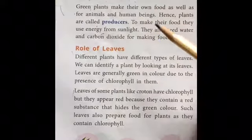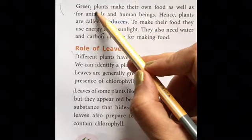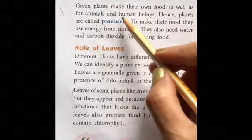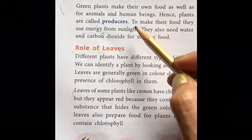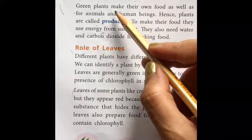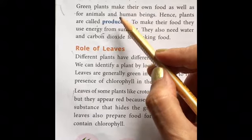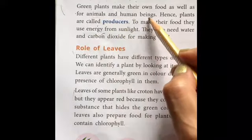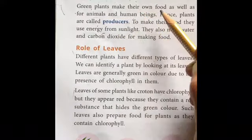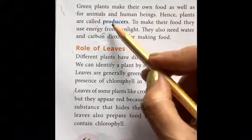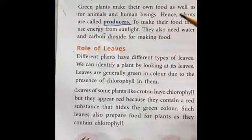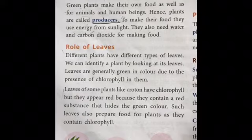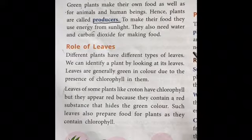Now the first thing we are going to discuss is plants as producers. All the green plants make their own food — for themselves as well as for animals and human beings. That's why we call them producers; they make food for all.